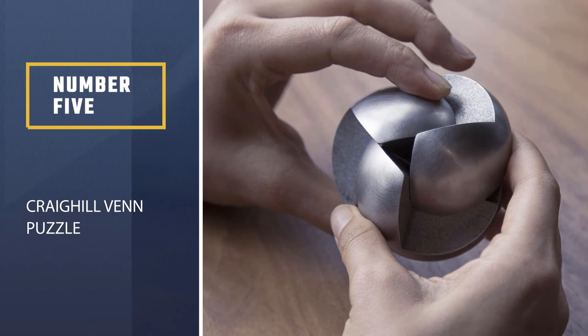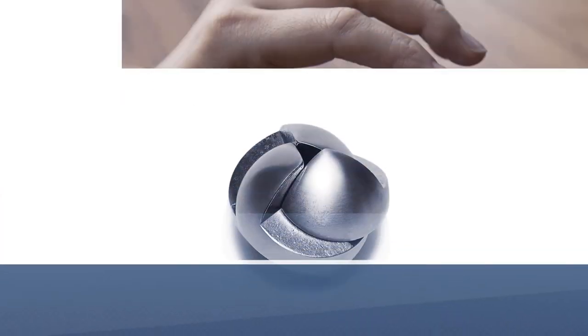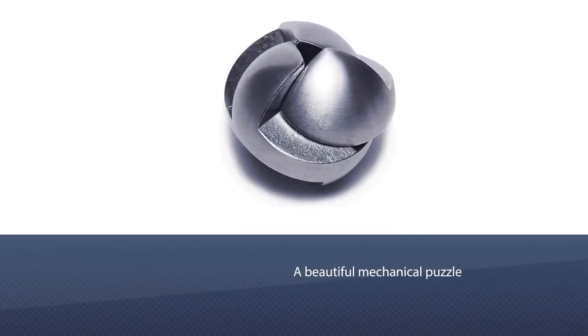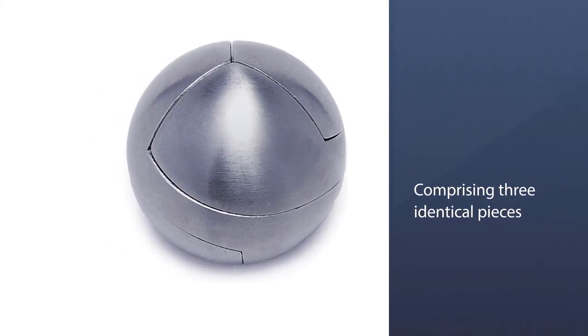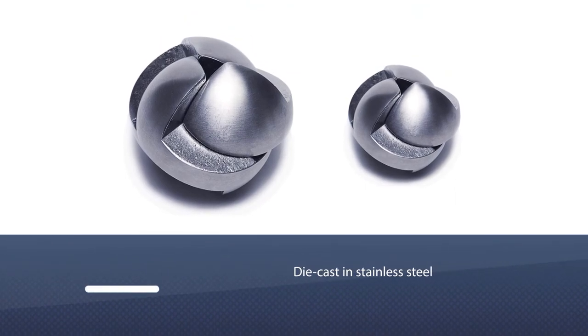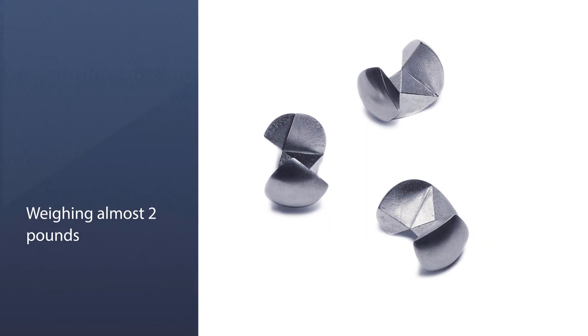Number 5: Craig Hill Venn Puzzle. If you love wrapping your head around a brain teaser, Venn Puzzle from Craig Hill is for you. A beautiful mechanical puzzle comprising three identical pieces, die-cast in stainless steel and weighing almost two pounds. The Venn Puzzle is a surprisingly difficult dexterity challenge and intriguing addition to your desk, shelf, or coffee table.